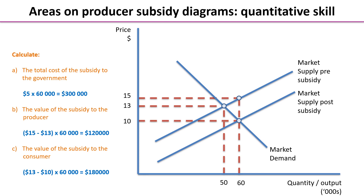The total cost of the subsidy to the government is the vertical distance between the two supply curves — that's between $10 and $15 — so the subsidy per unit is $5. The new equilibrium output is 60,000 units, so $5 times 60,000 units is $300,000. The value of the subsidy to the producer is $15 minus $13, so $2 per unit times 60,000 gives us $120,000. Whereas the value of the subsidy to the consumer is $3 per unit times 60,000, which gives us $180,000.